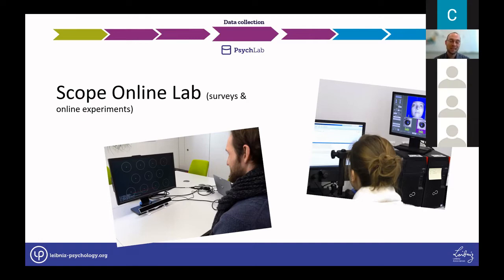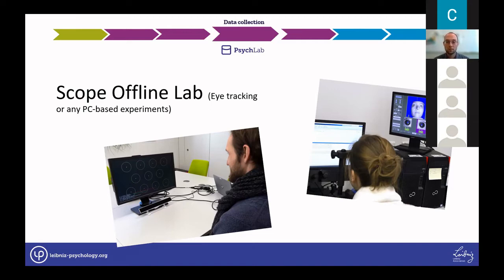The offline lab is located at the ZPID office in Trier. Experiments run offline on the lab's IT and eye-tracking infrastructure—three rooms equipped with different state-of-the-art eye trackers. Researchers provide the code and files for running the experiment, and ZPID takes care of data collection, all free of charge with only feasibility and quality being decisive. The next step is archiving and publishing output—not the publication itself, but the data, code, and everything else produced in the research.